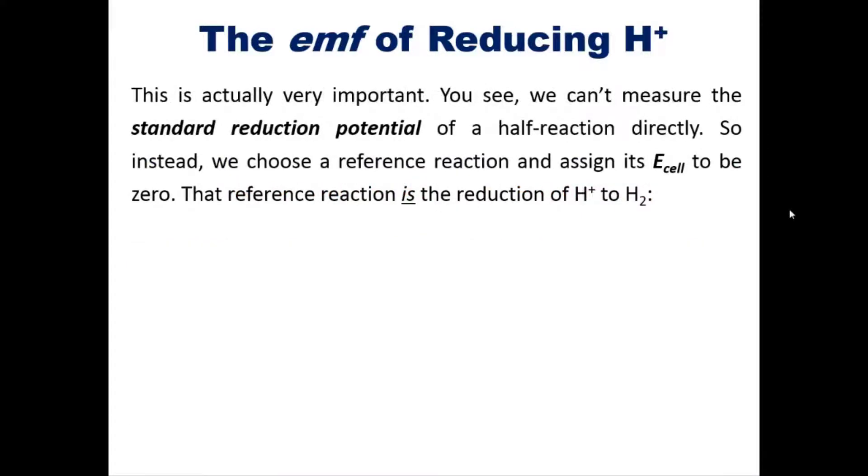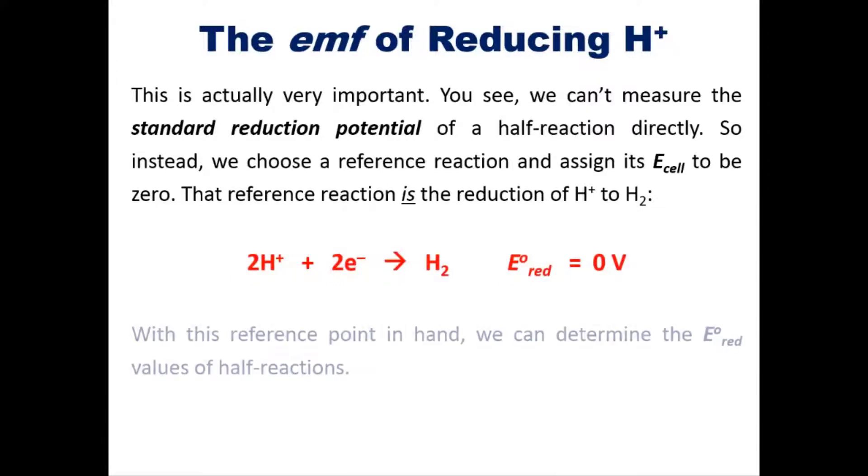You see, we can't measure the standard reduction potential of a half reaction directly because in reality redox reactions occur with reduction and oxidation happening virtually simultaneously. So instead, we choose a reference reaction and assign its E_cell to be zero. That reference reaction happens to be the reduction of H+ to H2 as shown here: zero volts.